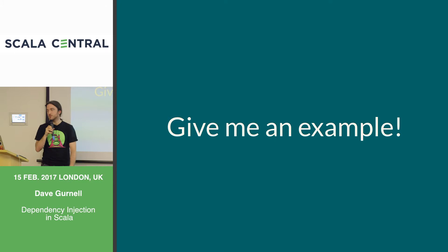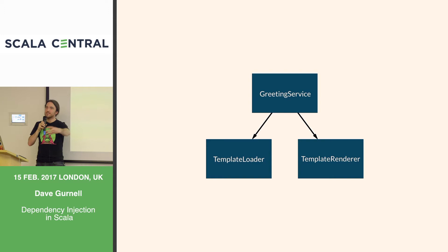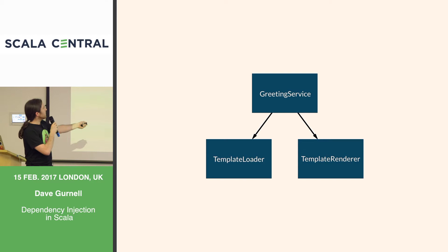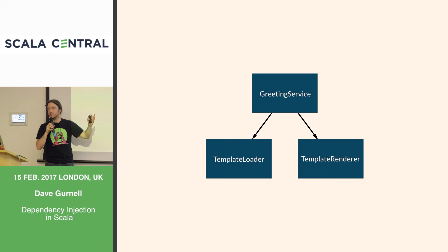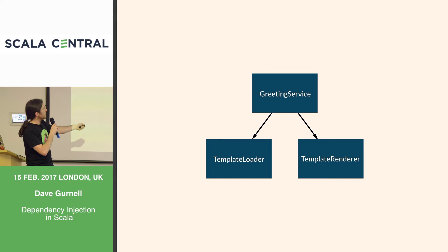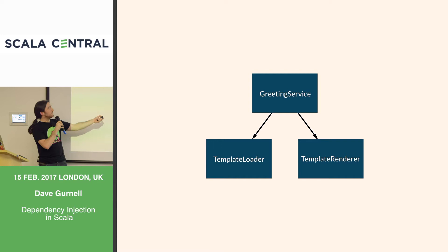I'm going to use a little example. Unfortunately I thought of the Megadeth joke too late, so my example is nothing cool or metal — it's a greeting card service. We might have a Valentine's Day greeting card service that would create a greeting card by loading a template from some template store — say we put them on S3 — and then taking some parameters and the template and passing them into a renderer, like a Mustache template renderer. So our main service has two dependencies.